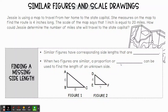Welcome to another video. We're talking about similar figures and scale drawings. Jesse is using a map to travel from her home to the state capitol. She measures on the map to find the route is four inches long. The scale of the map says that one inch is equal to 20 miles. How could Jesse determine the number of miles she will travel to the state capitol?